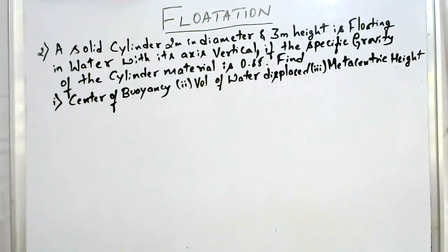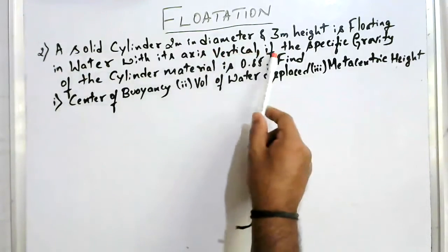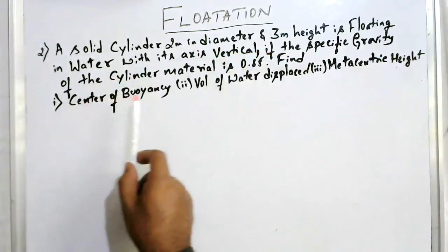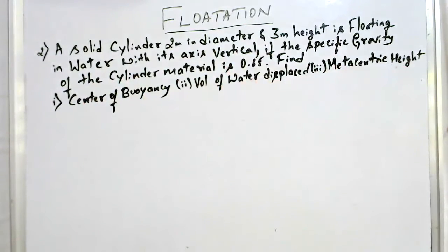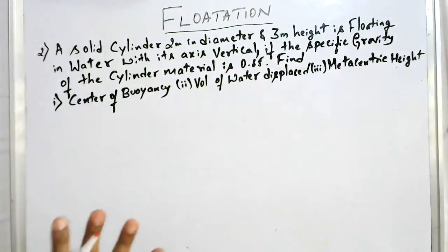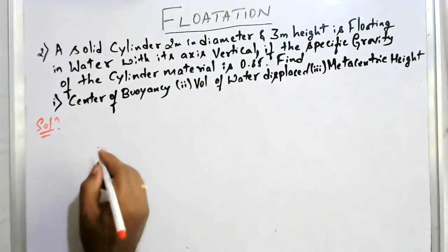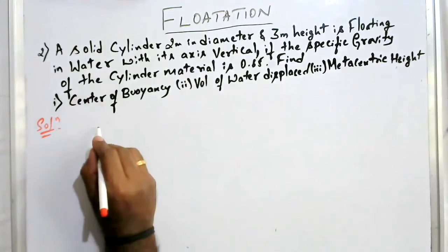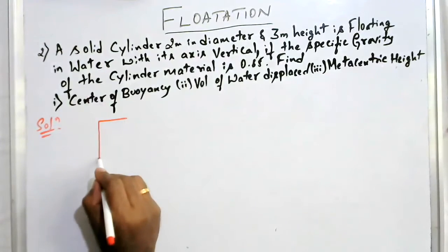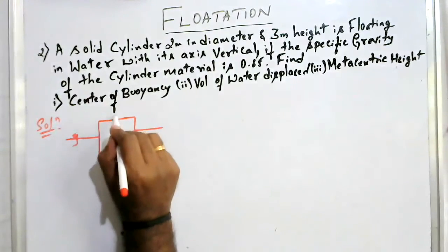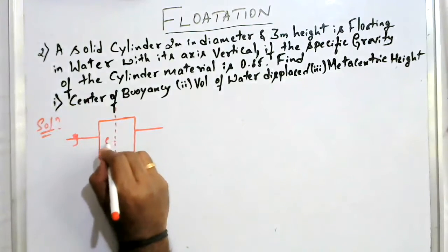Problem two: a solid cylinder 2 meter in diameter and 3 meter height is floating in water with its axis vertical. If the specific gravity of the cylinder material is 0.65, find the center of buoyancy, volume of water displaced, and the metacentric height. It is similar to the previous case, but instead of a rectangle he has given a cylinder. Let me draw the sketch.